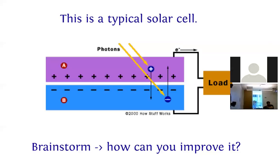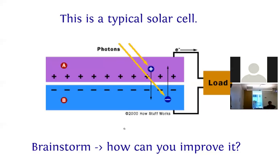Another idea: anti-reflection. Light is coming in and we want all the light to go inside, where it's absorbed. But because silicon acts like a mirror, some light will escape off the top. If we could apply some kind of anti-reflection coating here which minimizes light loss by reflection, that will help. We will talk about this in a couple of lectures.